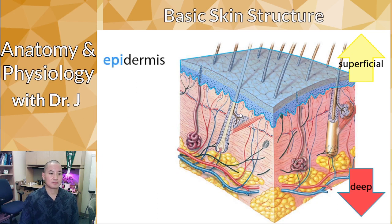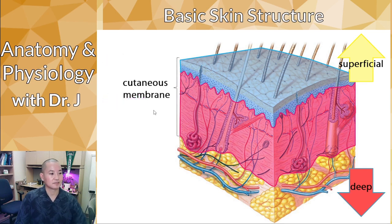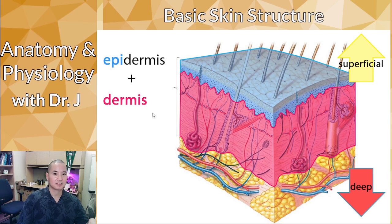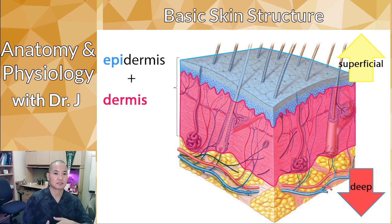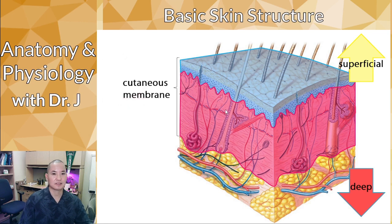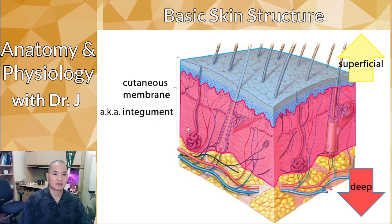We'll work from superficial to deep, starting with the epidermis. When an epithelium combines with connective tissue, it forms a larger structure called a membrane. In the case of the epidermis and dermis, they form the cutaneous membrane, also known as your integument — which is why it's called the integumentary system.